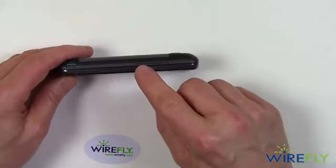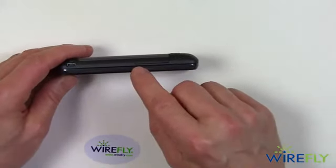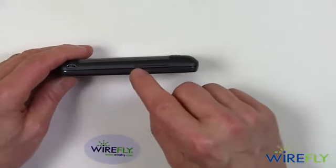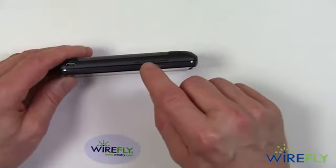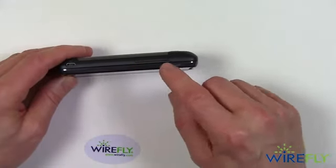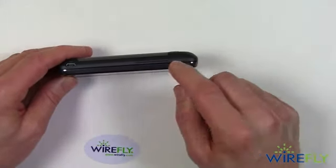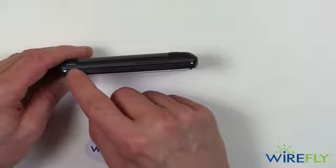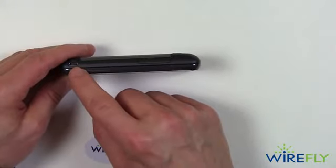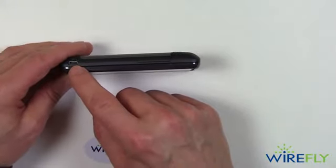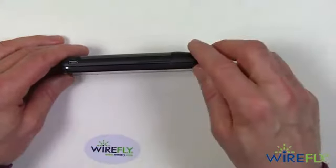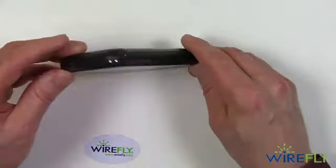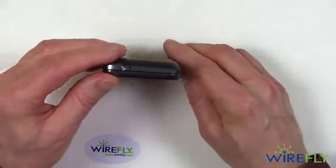This is the volume rocker switch that turns the ringer up and down, as well as the volume that comes out of the audio jack. Here you have the micro USB port that you use for syncing and charging the phone.